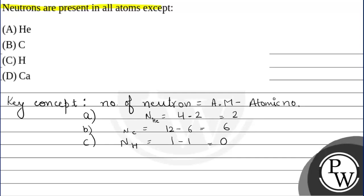Agar hum baat karein Calcium ki (if we talk about Calcium), that will be number of neutrons in Calcium: atomic mass is 40 minus 20. So, they are 20.